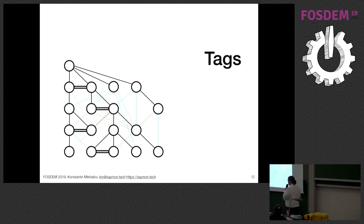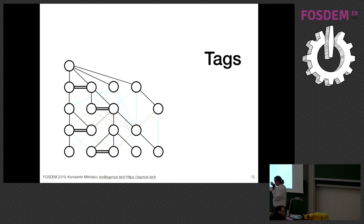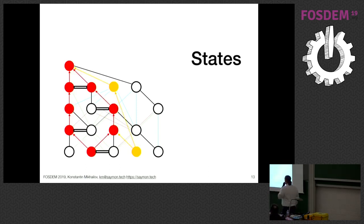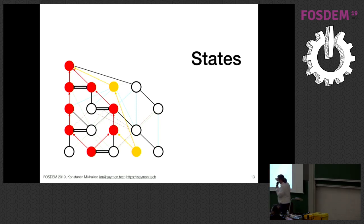We also have tags in the system. You can tag whatever you want — an object or a link — and manipulate it with tags. Each object has a state, and this state allows you to propagate the state of the tree up to the parent objects.